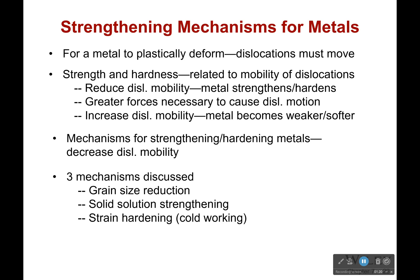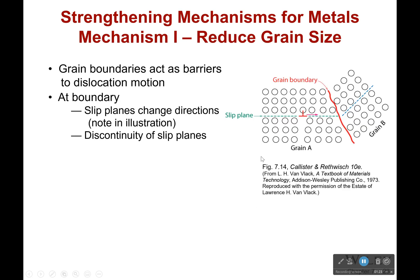We're going to talk about one of these today, which is grain size reduction. Grain boundaries act as barriers to dislocation motion, at least if we're trying to dislocate along that line across the grain.